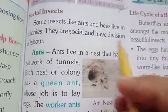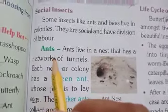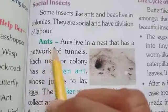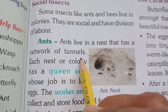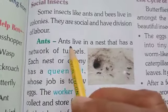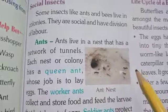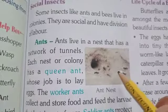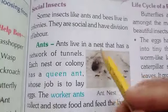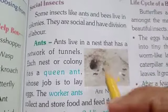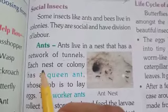Next, ants are explained. Ants live in a nest that has a network of tunnels. They have made a network of tunnels inside the nest, so they can enter from different ends.